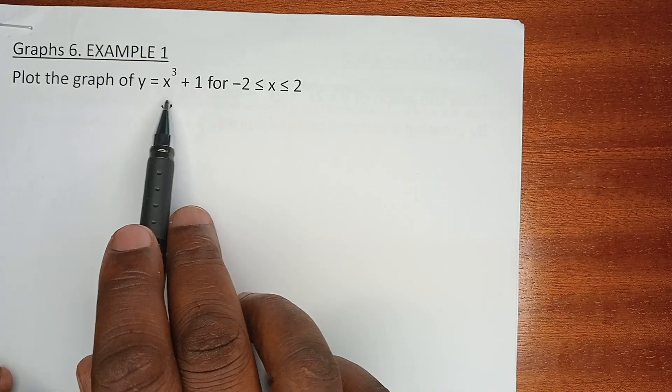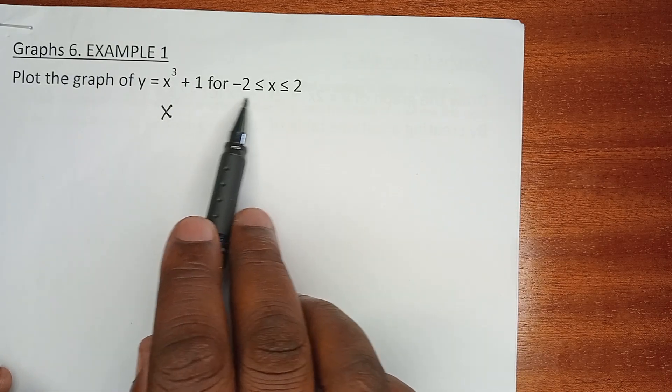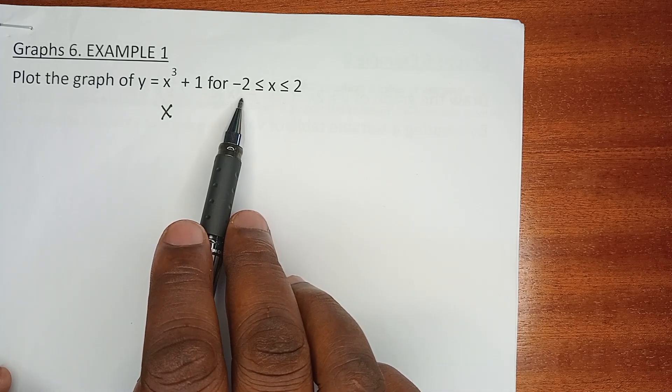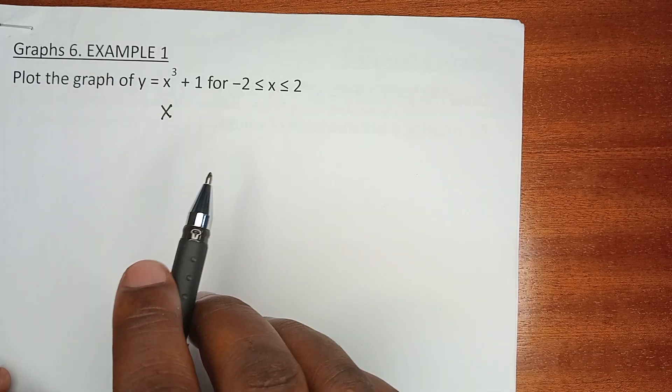Plot the graph of y equals x cubed plus 1, with the limits of x or the domain all the way from negative 2 to positive 2. So what we need to have, we should have several columns and rows.